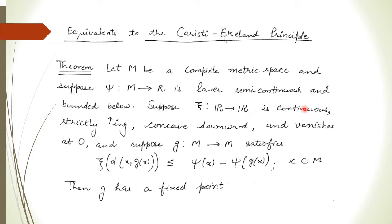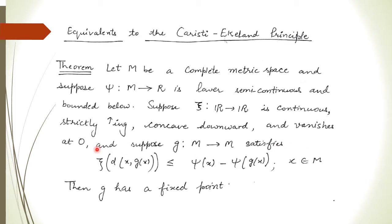ξ is continuous, strictly increasing, concave downward, and vanishes at 0 — meaning ξ(0) = 0. Suppose there is a mapping g which is a self-mapping going from m to m satisfying a given inequality.